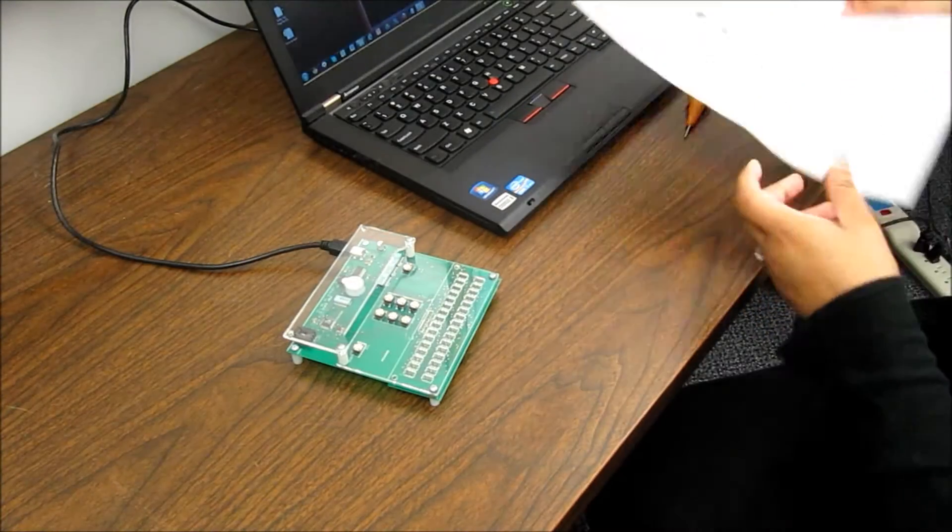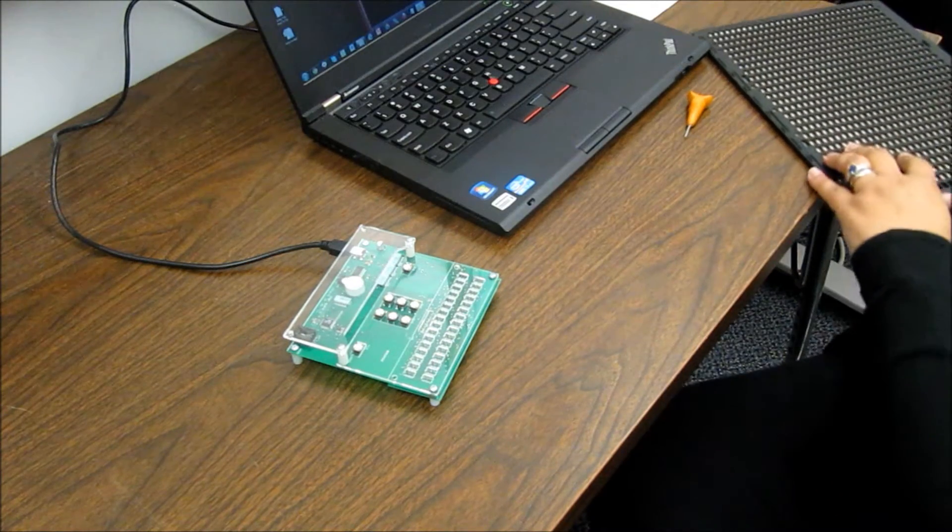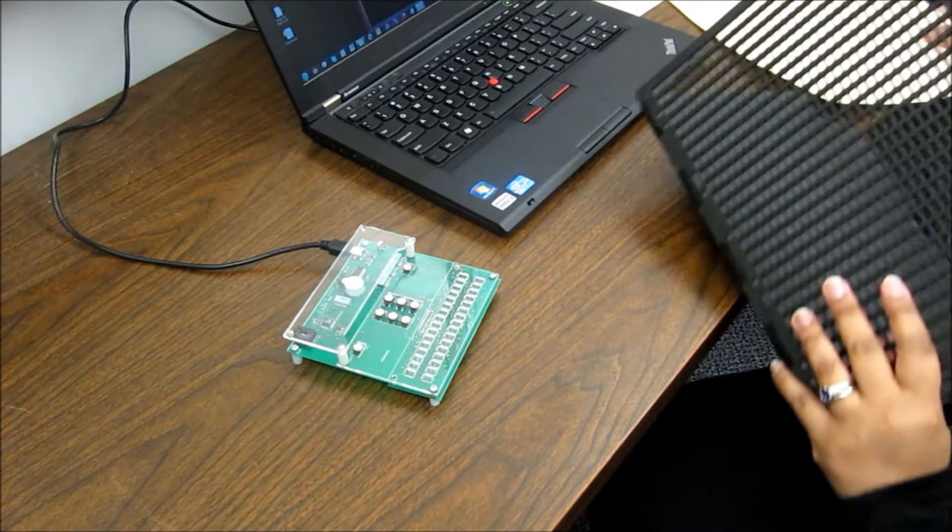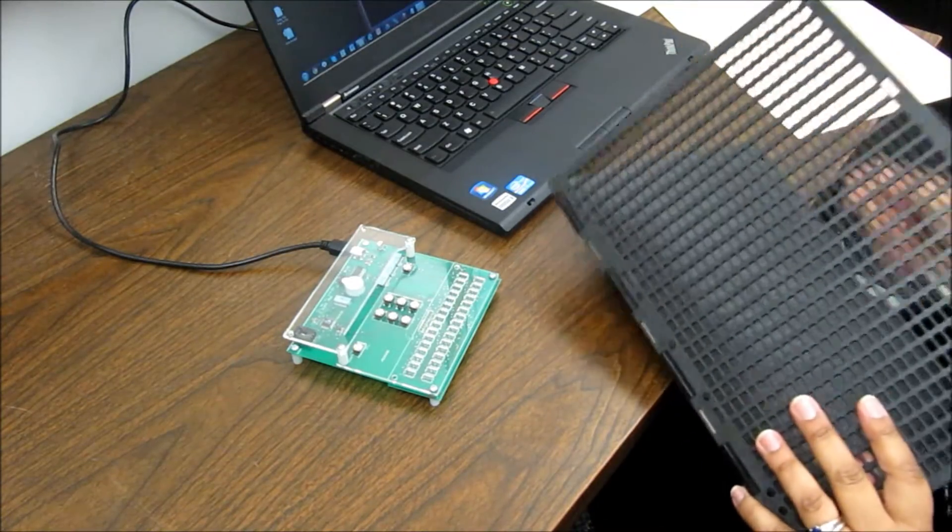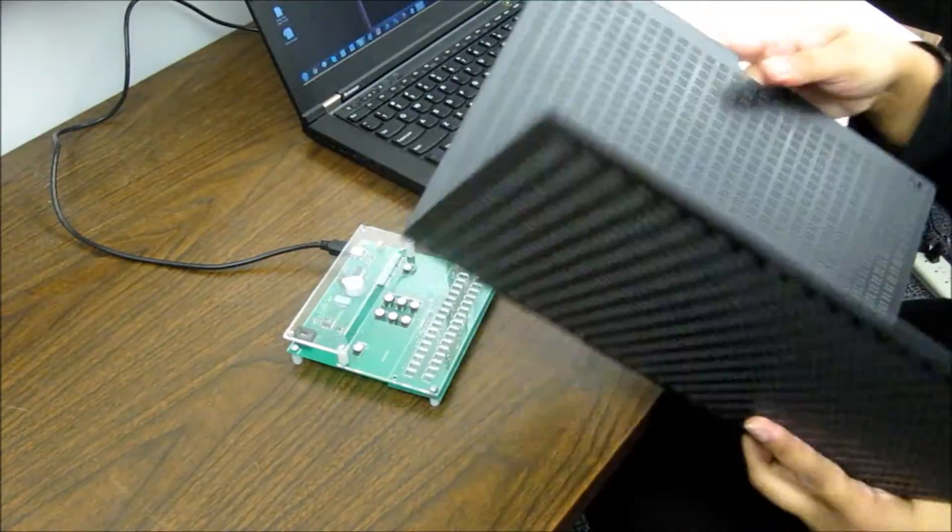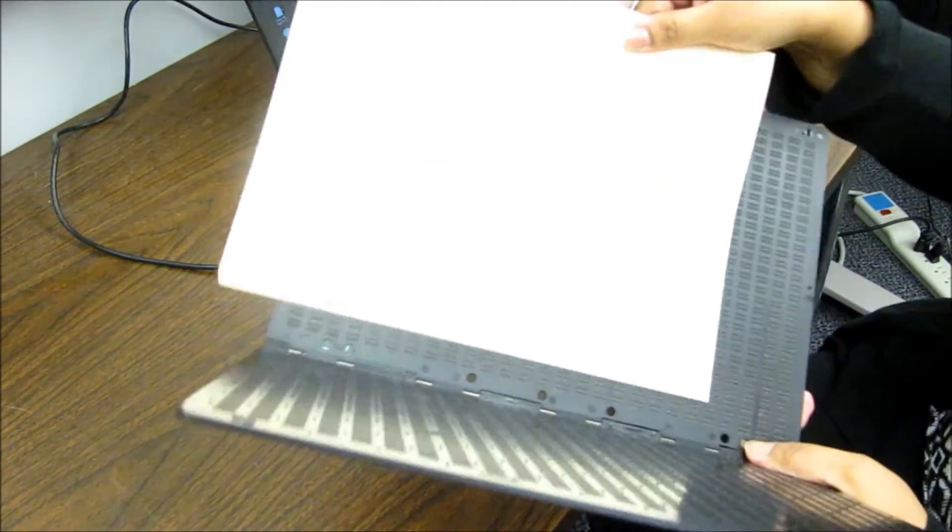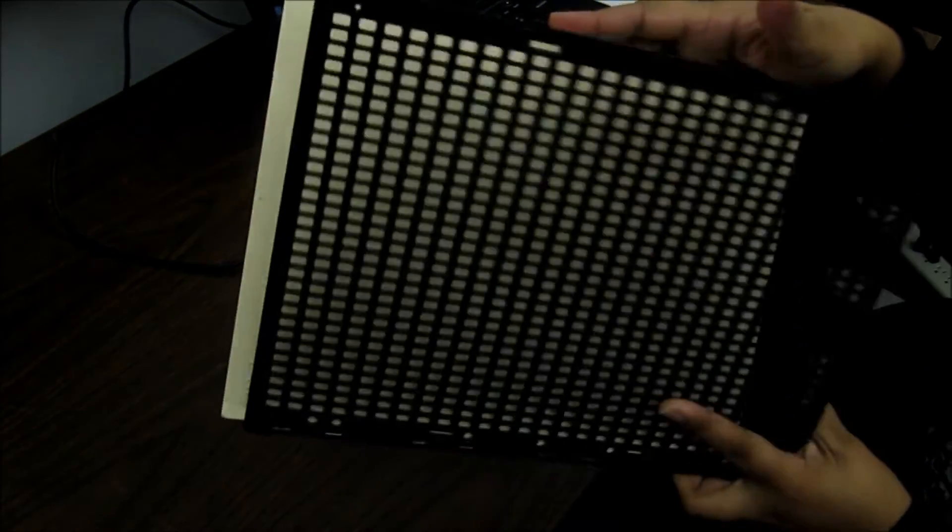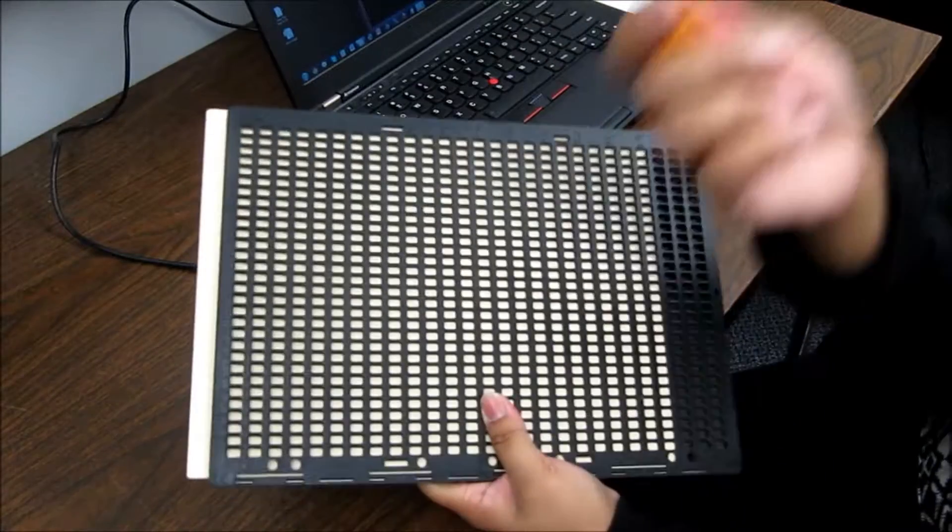In order to write Braille, in most developing communities, what people use is called a Braille slate and stylus. So this is a Braille slate. The way you would write Braille is you insert a Braille paper in the middle of these two and you use a stylus.